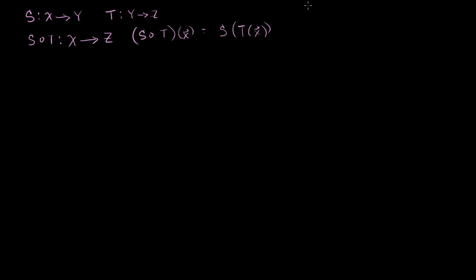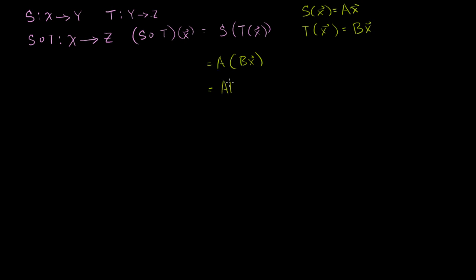We saw this several videos ago. If S of x can be represented as the matrix multiplication Ax — the matrix-vector product — and if the transformation T can be represented as the product of the matrix B with x, then the composition is A times Bx. By our definition of matrix products, this is equal to the matrix AB times x. When you take the product of two matrices, you just get another matrix. So you take the first linear transformation's matrix A and multiply by the second one's matrix. All of this is review so far.